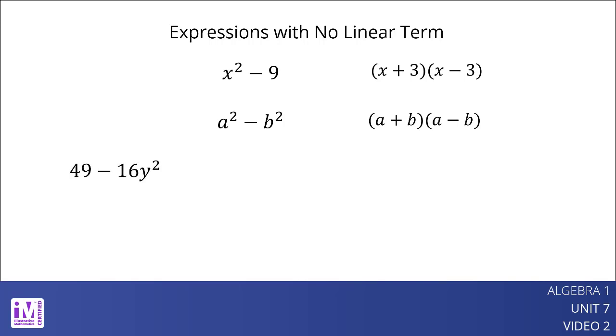49 minus 16y squared. This expression can be written 7 squared minus the quantity 4y squared. So an equivalent expression in factored form is the quantity 7 plus 4y times the quantity 7 minus 4y.